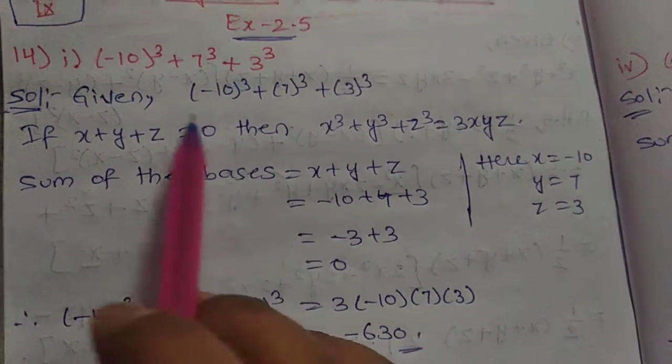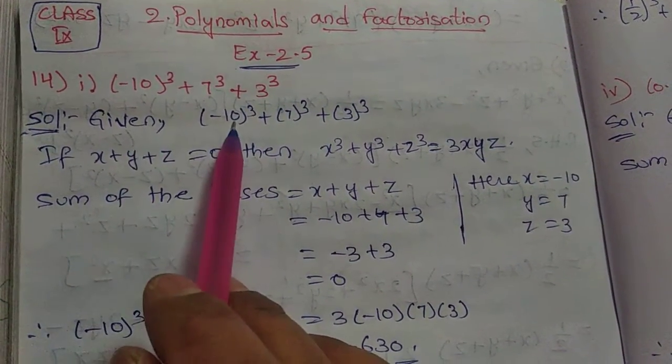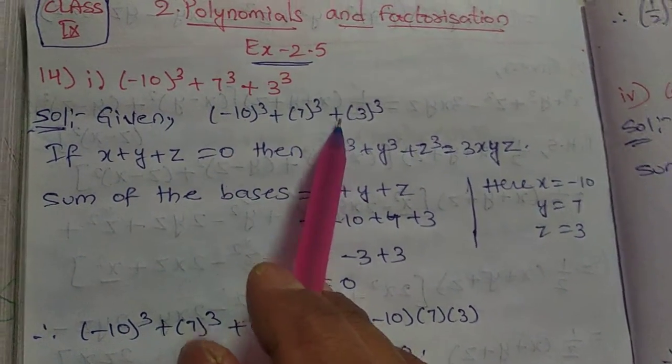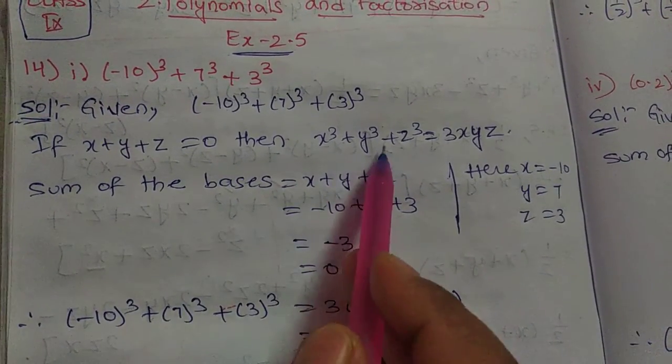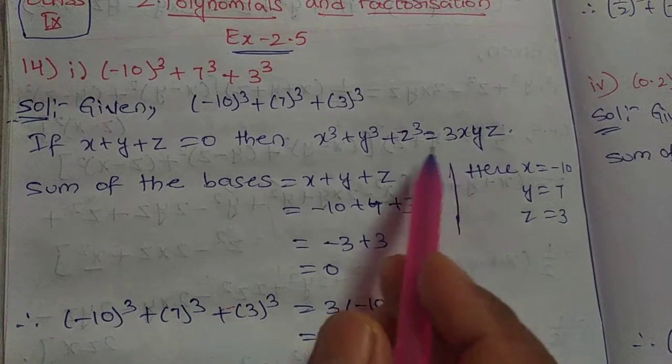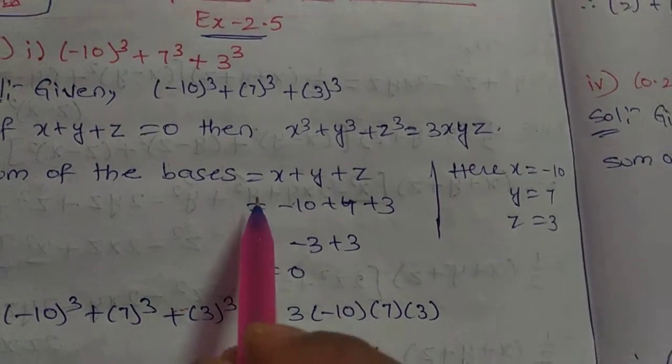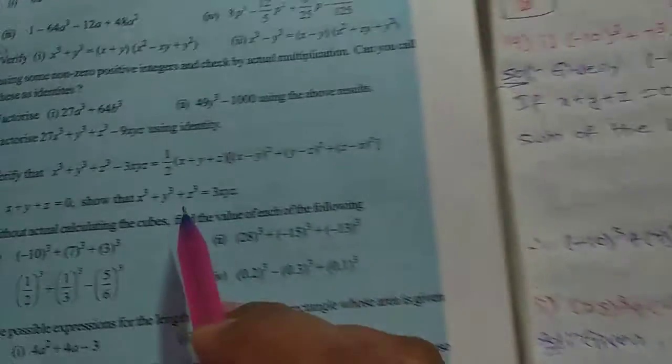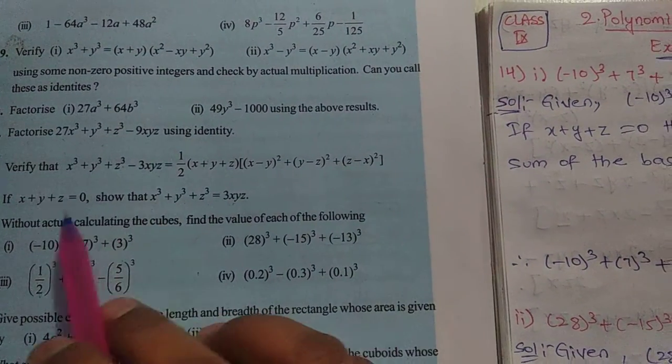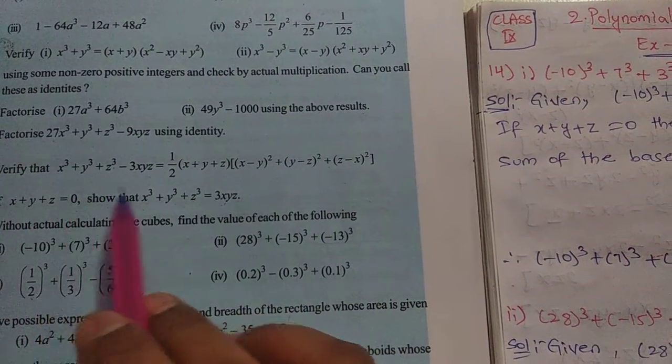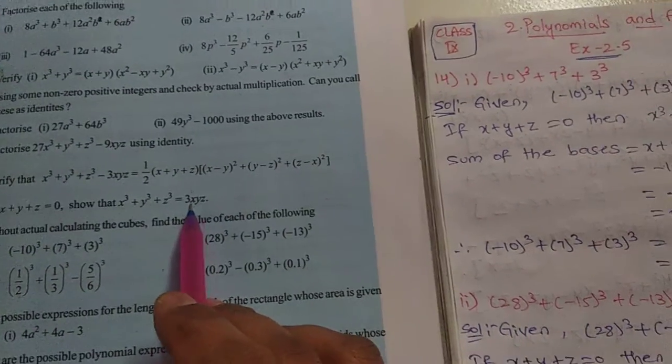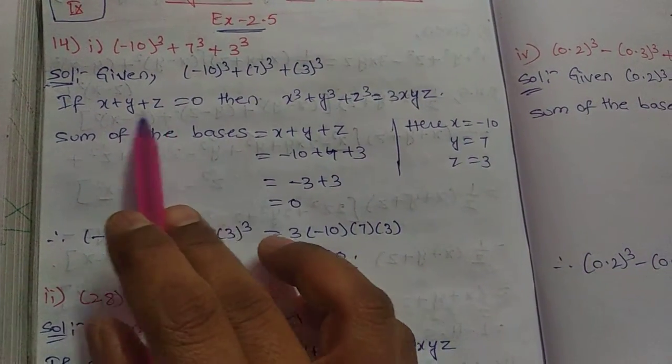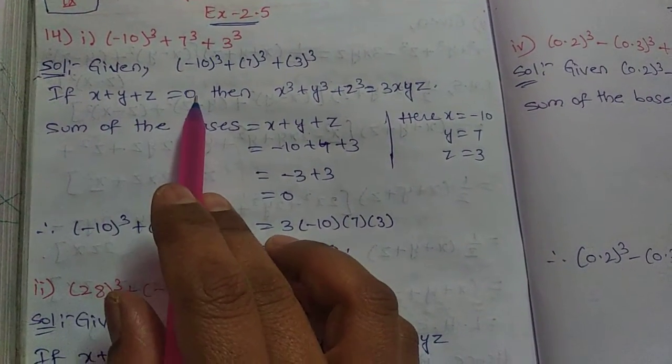First, write the given expression: (-10)³ + 7³ + 3³. There's an identity here: if x + y + z = 0, then x³ + y³ + z³ = 3xyz. I explained this in problem 13, and I'll provide the link. Here, my x + y + z equals 0, so I can use this identity.